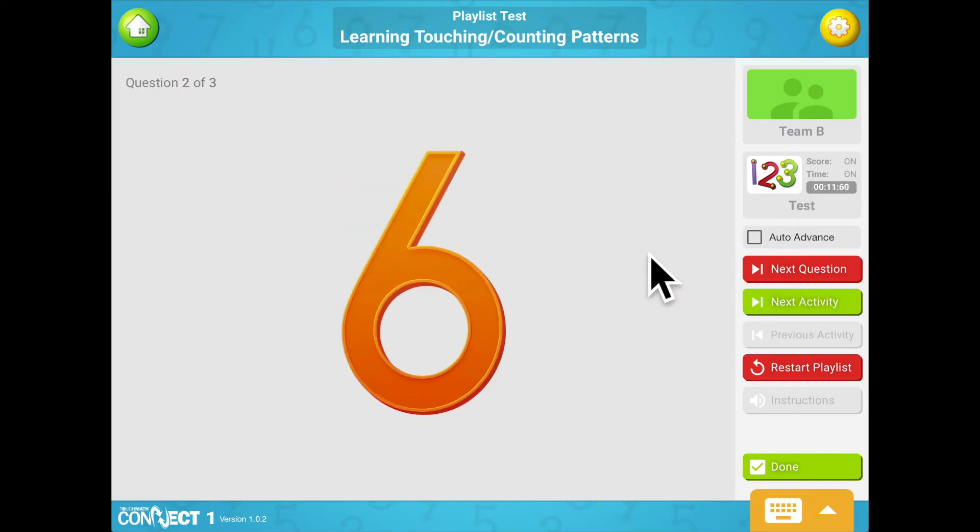The numeral 6 has double touch points. This means you touch and count each touch point twice. The 6 is touched and counted from top to bottom: 1, 2, 3, 4, 5, 6. Touch and count the touch points on the numeral in the correct order. Click on the Done button when you are finished. 1, 2, 3, 4, 5, 6. Rock on!